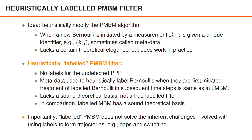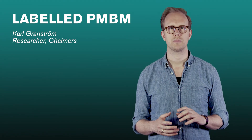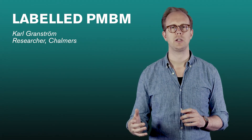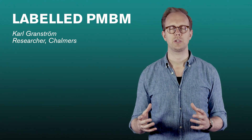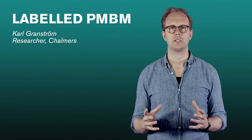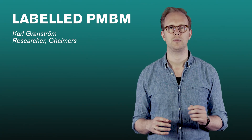However, importantly, even if we can implement a heuristically labeled PMBM filter, this does not solve the inherent challenges involved with using labels to form trajectories, such as gaps and switching. And these challenges will be the topic of a later video. That was labeled Poisson point process and why it's problematic, as well as the heuristically labeled PMBM filter, which is a heuristic approach to tracking with labeled objects. Next, we will have a look at some of the challenges we face when we use labels to form trajectories.